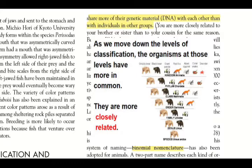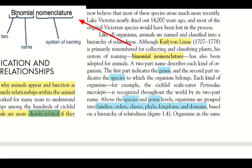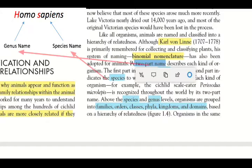Furthermore, binomial nomenclature is discussed here. A scientist named Carl von Linné gave us this classification system, which includes a two-part scientific name. The first part is the genus and the second part is the species name.